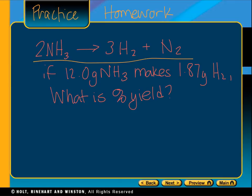I would like you to take the 12.0 grams of NH3 that makes 1.87 grams of H2 and calculate the percent yield. Keep in mind that to find percent yield, you need to start with the reactant. Pick which one of these two substances is the reactant, convert it into the other one, and then calculate the percent yield.